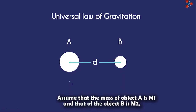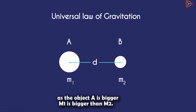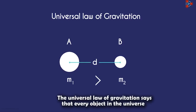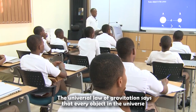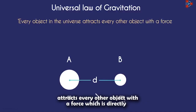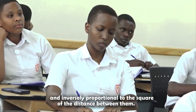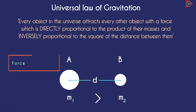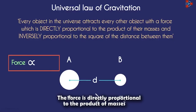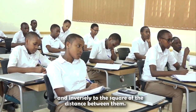Assume that the mass of object A is m1 and that of object B is m2. As object A is bigger, m1 is greater than m2. The Universal Law of Gravitation states that every object in the universe attracts every other object with a force which is directly proportional to the product of their masses and inversely proportional to the square of the distance between them.